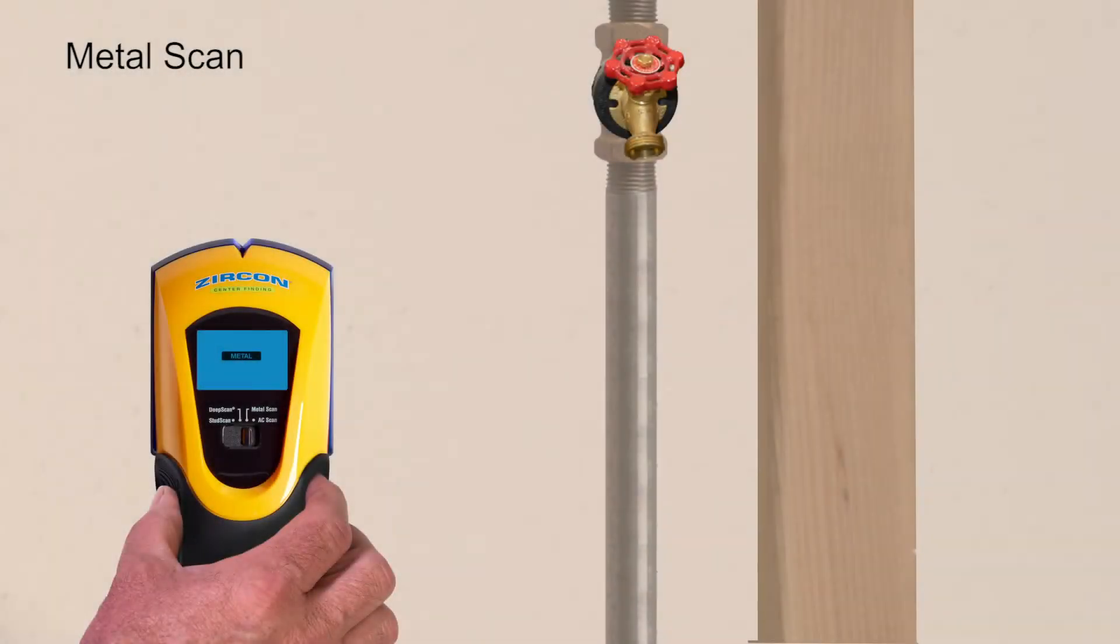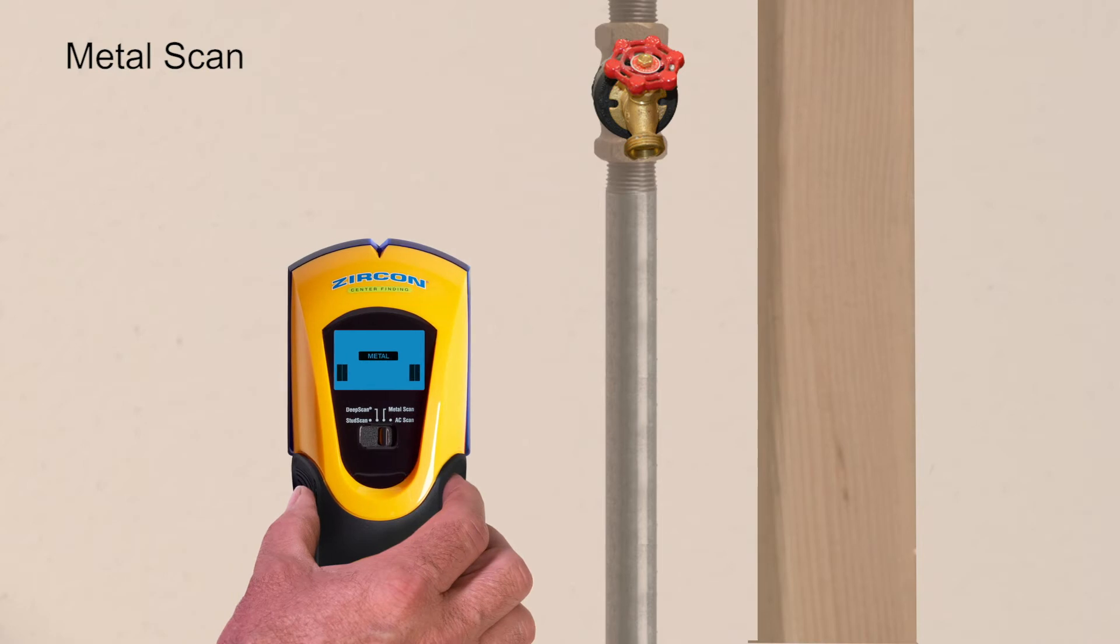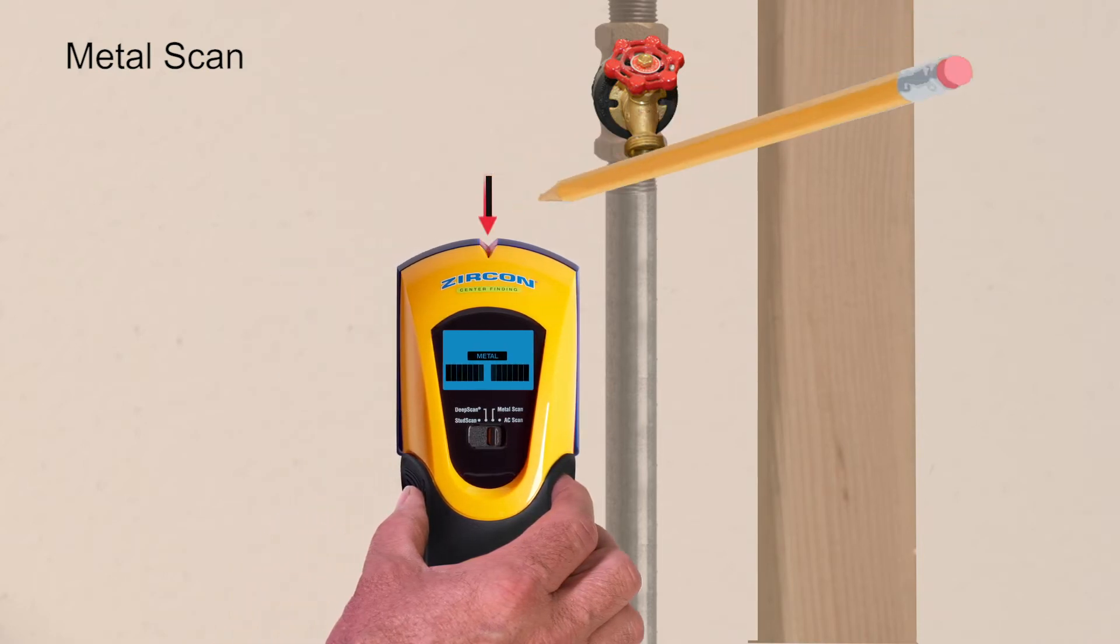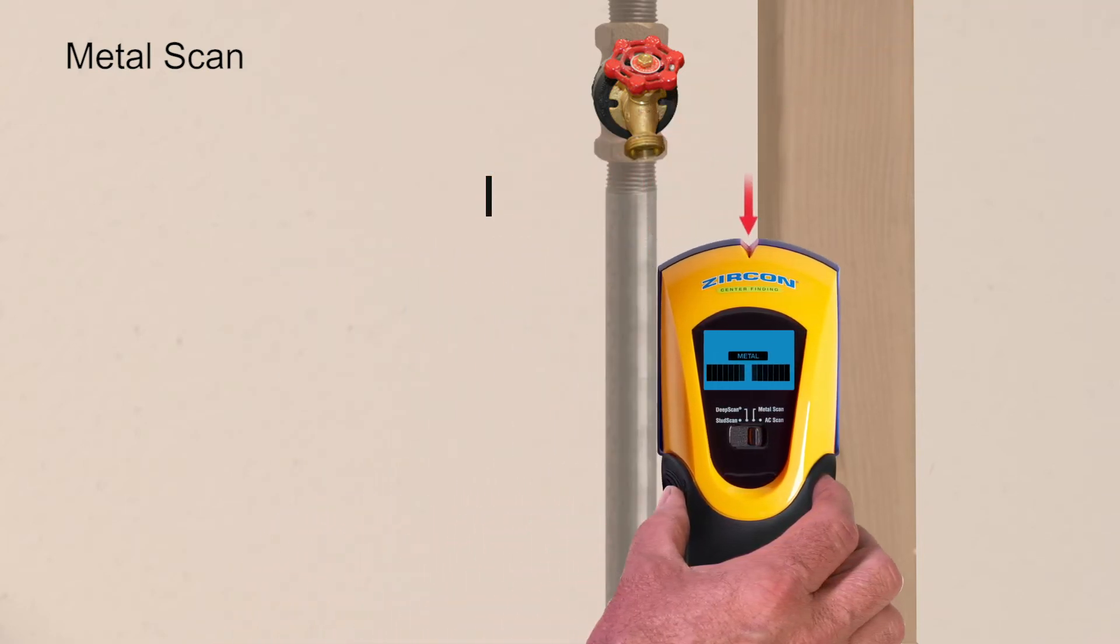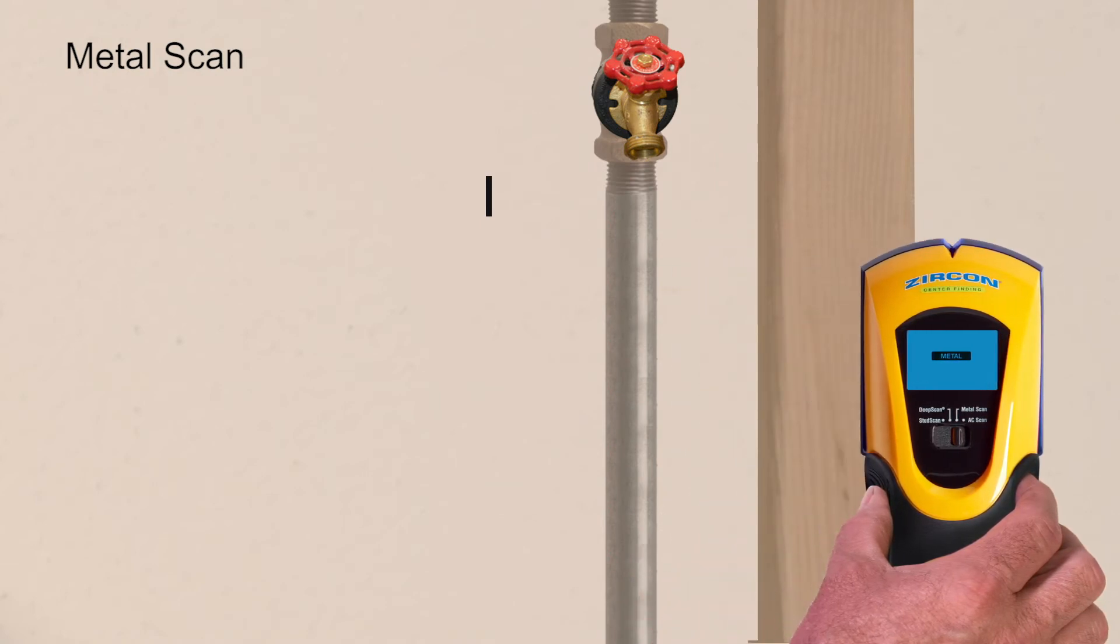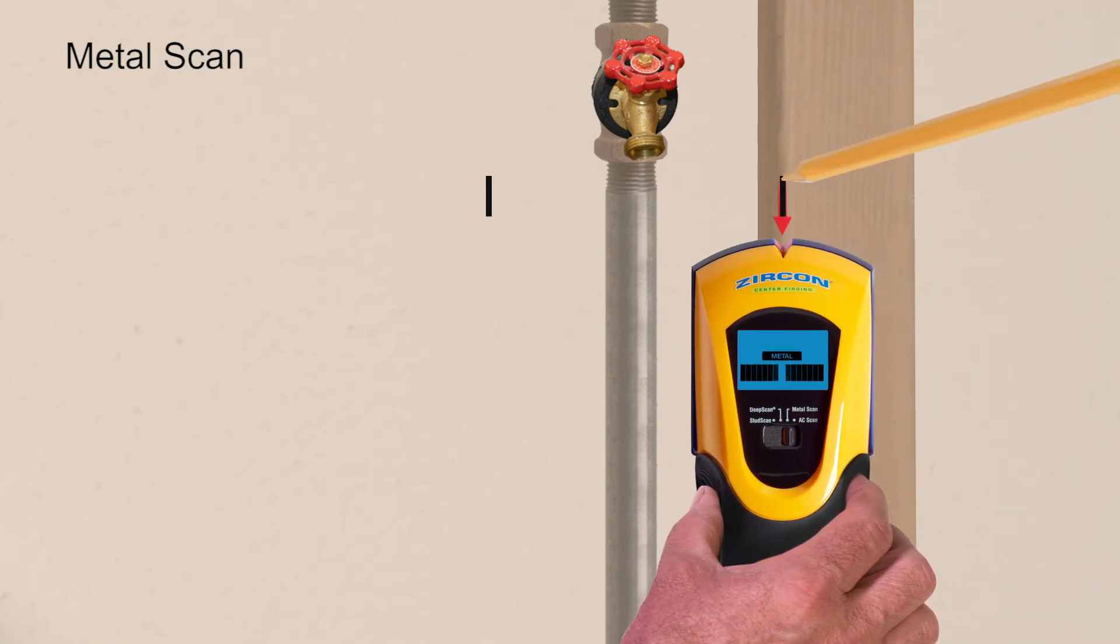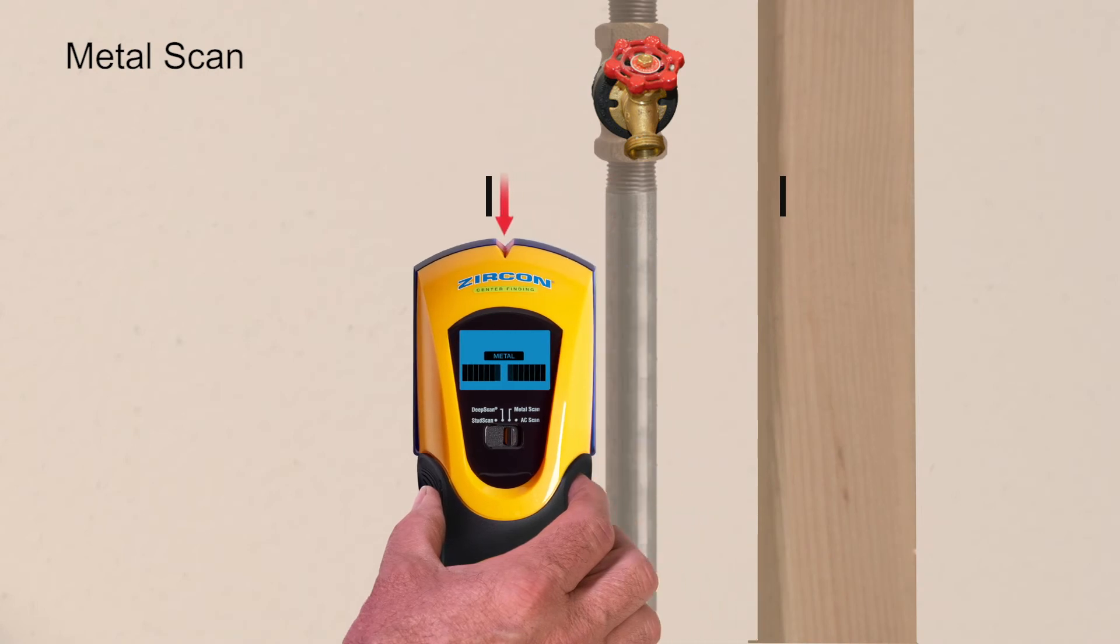To find metal, select metal scan. The target indication bars ramp as you approach metal, and the spotlight pointer shines when you're near the target. To narrow the results, refer to the interactive calibration method in the instructions.